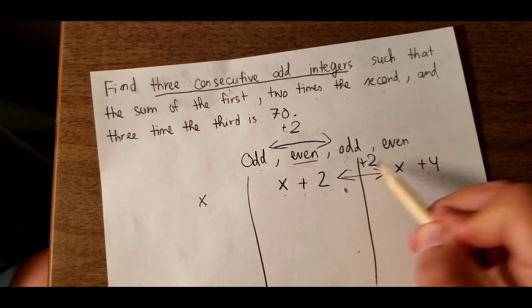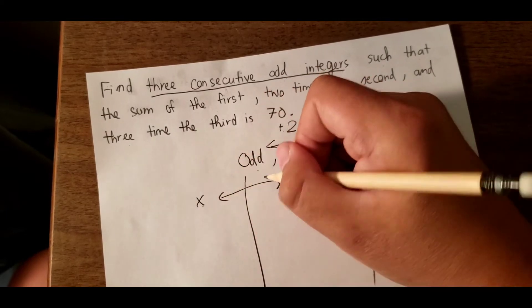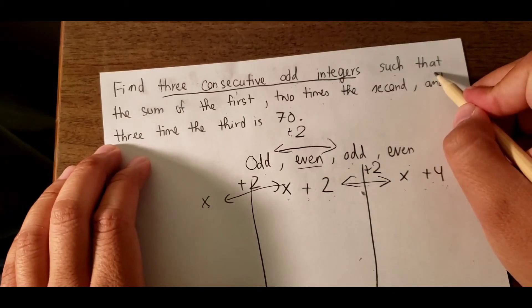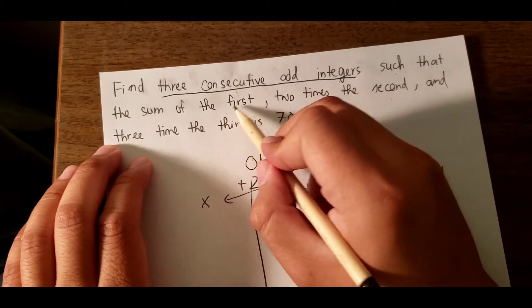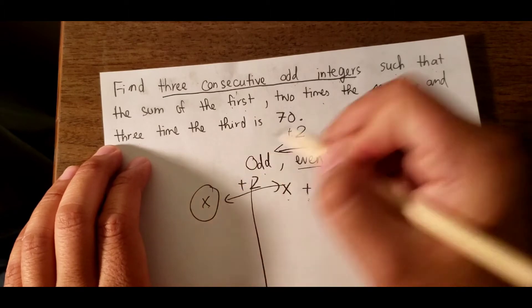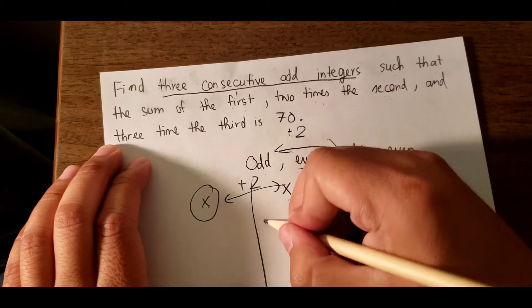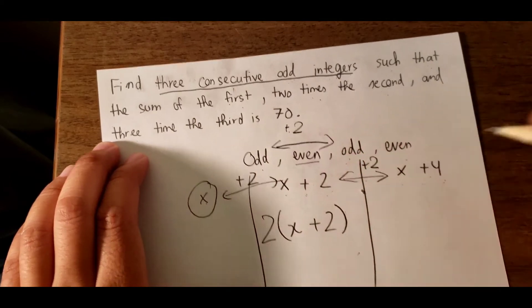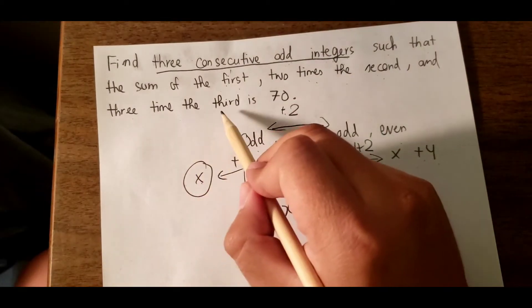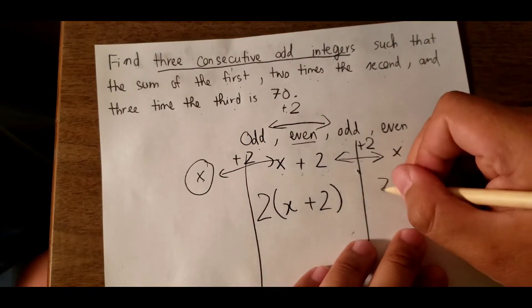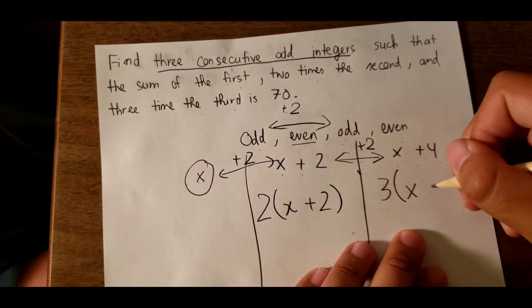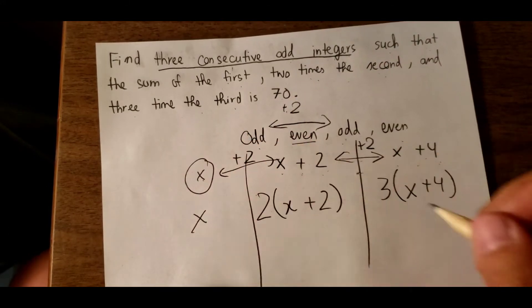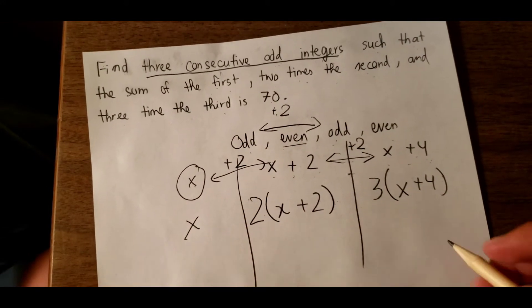Now, in the question it mentions the sum of the first - here that's the first number - two times the second, which means 2 times (x plus 2), and three times the third, which is 3 times (x plus 4), equals 70.